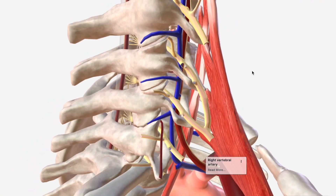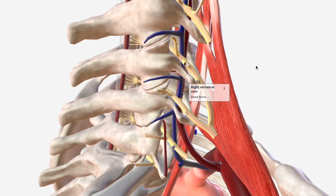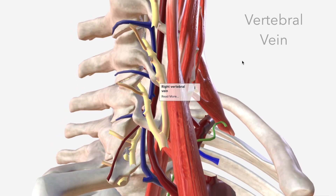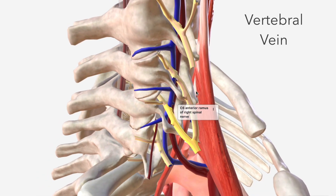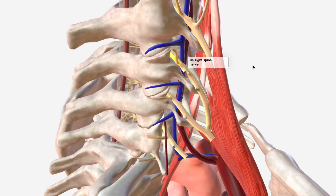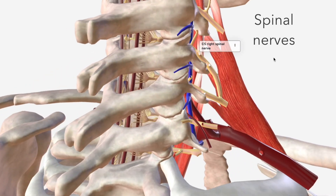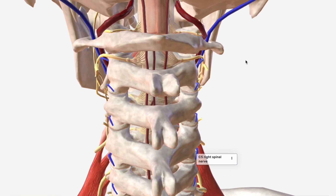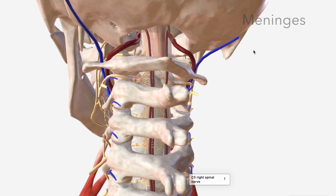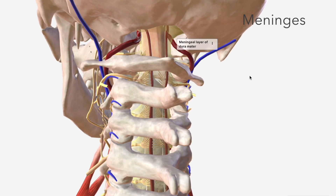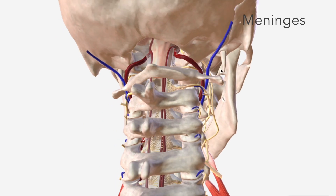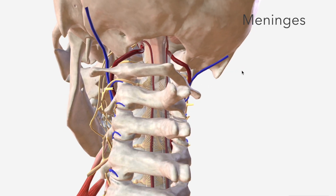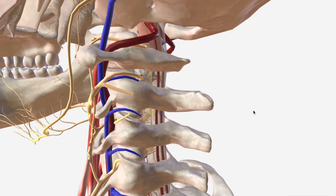As the vertebral artery enters the transverse foramina, it joins up with the vertebral vein, which abuts it posteriorly. And immediately posterior to that, we have the spinal nerves departing the spinal canal. As we continue up the cervical vertebrae, we can see the meninges, and we see the vertebral artery piercing them, transitioning from V3 to V4 after it has pierced those meninges.